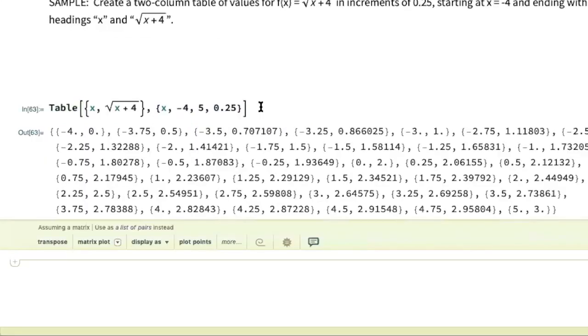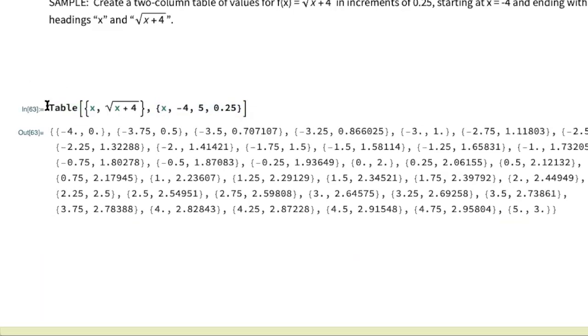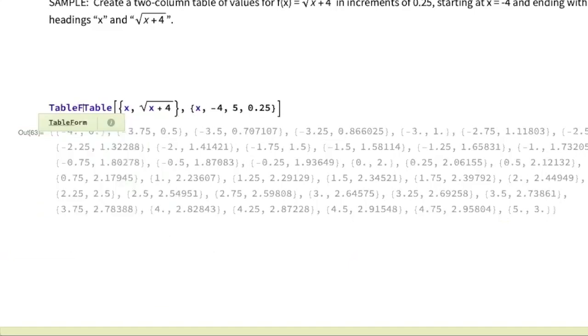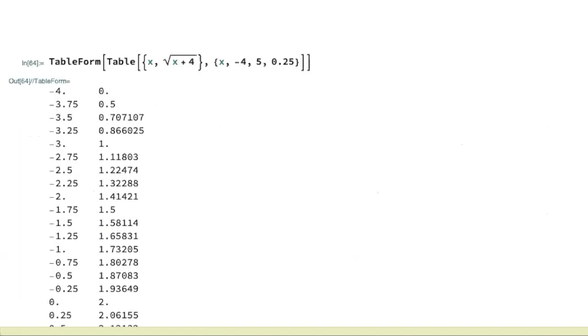All right, I have inputs and outputs, but this does not look like a table. There's actually an additional command you need to use right in the very beginning, which is the TableForm command, which literally stands for format as a table. You put that command in front, open the square bracket, close it at the other side, and now we're getting something that looks like a two column table. So this is better.